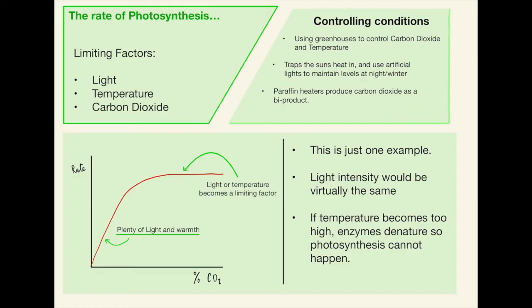Controlling conditions, so a lot of industrial farming nowadays, we use greenhouses to control the carbon dioxide and temperature. By building the greenhouses we trap the sun's heat in and we can use artificial lights to maintain those sunlight levels in the night and the winter. Something called paraffin heaters produce carbon dioxide as a by-product. Again that last point is probably edging a bit more on the higher side of things.